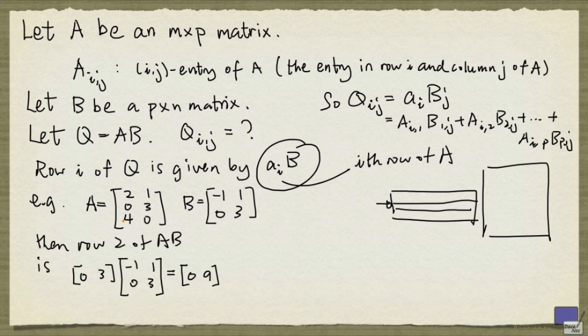So for example, the 3-2 entry of the product AB here will be given by (4, 0) times (1, 3), and that's just 4.